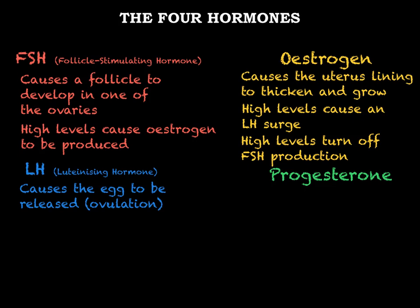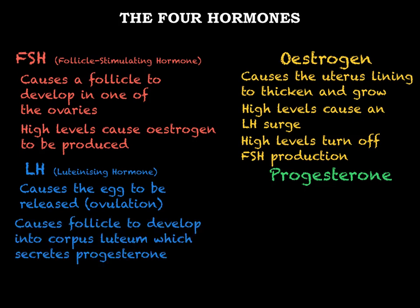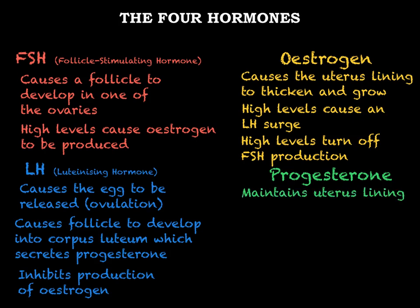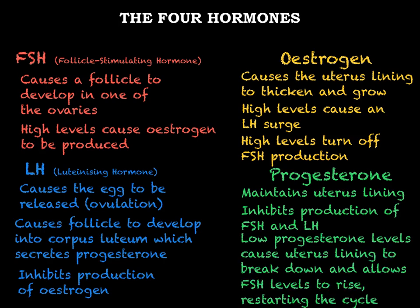The LH surge also stimulates the remains of the follicle to develop into a structure called a corpus luteum. The corpus luteum secretes progesterone and helps to turn off the production of oestrogen. Progesterone maintains the lining of the uterus and inhibits the production of both FSH and LH. When the level of progesterone falls and oestrogen is low, the uterus lining will break down. This low progesterone level allows FSH levels to increase and therefore the whole cycle starts again.